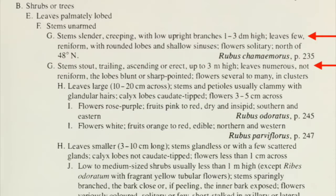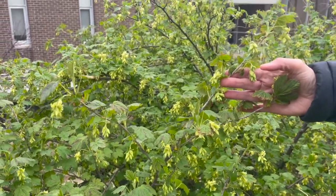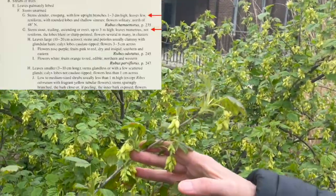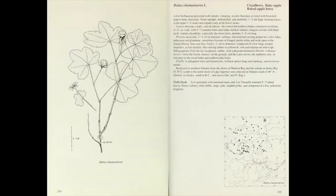Our next option — G: stems slender, creeping with low upright branches, one to three decimeters high, leaves few, reniform with rounded lobes and shallow sinuses, flowers solitary, north of 48 degrees north. Or G: stems stout, trailing, ascending or erect, up to three meters high, leaves numerous, not reniform, the lobes blunt or sharp pointed, flowers several to many in clusters. Our stems are stout, ascending or erect, taller than one to three decimeters, and the flowers are also in clusters, so we will choose the second option, G. If you weren't sure, you could flip to page 235 and check to see if this matches our species. Here you can find a description, map, and sketch, and we can see that this does not match our species, so we will continue on in the key.